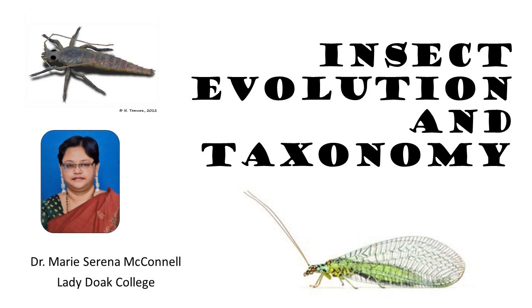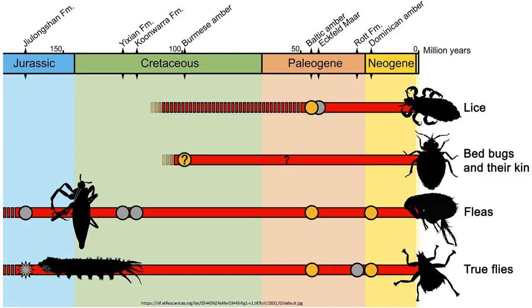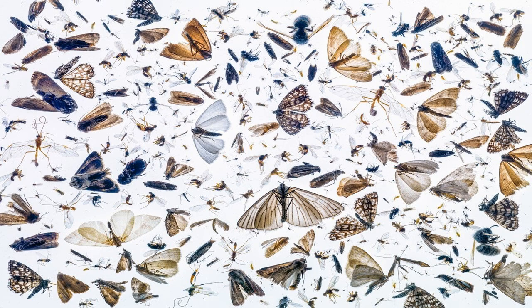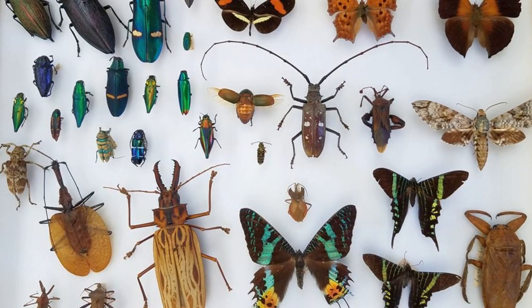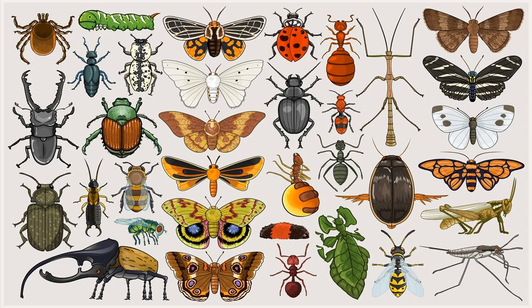Insecta, one of the most diverse and ecologically significant orders within the animal kingdom, encompasses an astounding array of species. From the delicate wings of a butterfly to the formidable mandibles of beetles, insects have adapted to virtually every ecological niche on earth. This video delves into the phylogeny and taxonomy of insects, exploring their evolutionary history and the various approaches used to classify them.